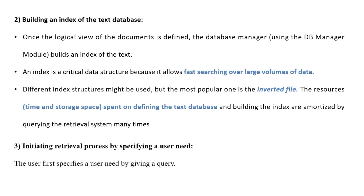Step 2 is building an index of the text database. Once the logical view is defined, the database manager builds an index on the text. An index is a critical data structure allowing fast searching over large volumes of data. The most popular indexing structure is the inverted file. The resources of time and storage space spent on building the index are amortized by querying the retrieval system many times.